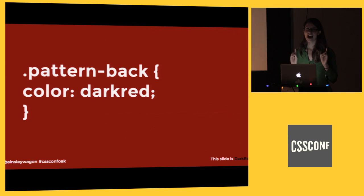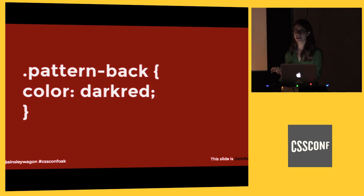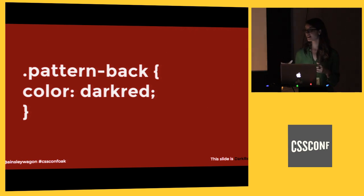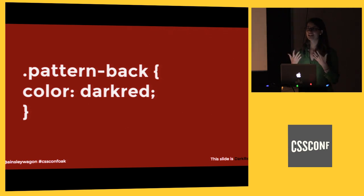Just to make sure we're on the same page — when I'm talking about CSS namespace values, I mean when you're coding in CSS and instead of typing in the hex value you can reference a set list of color keywords. There are about 147 of them, and the browser will know what you're talking about.